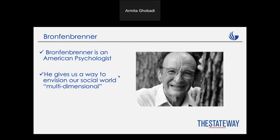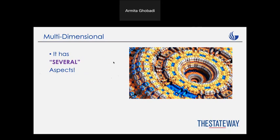Number two, we're going to talk about Bronfenbrenner. He's an American psychologist, and he gives us a way to understand social development better. He considered social development as multidimensional. Think about what multidimensional means — it has several aspects, and each aspect is going to interact with each other.